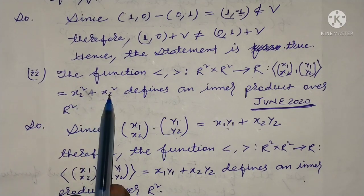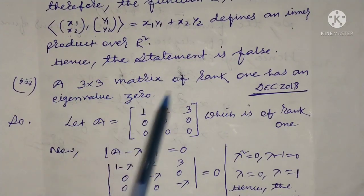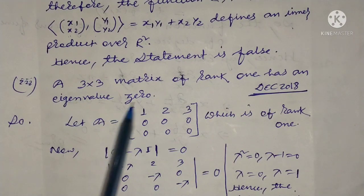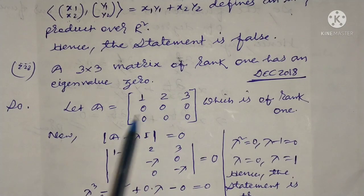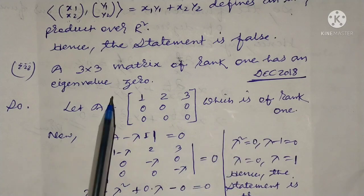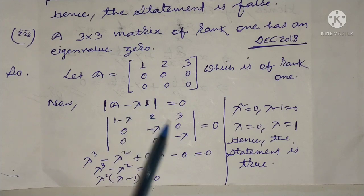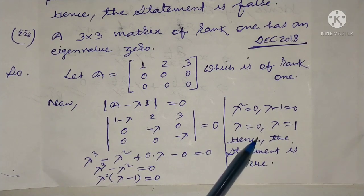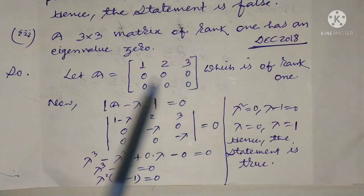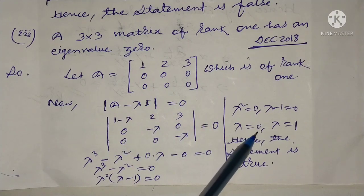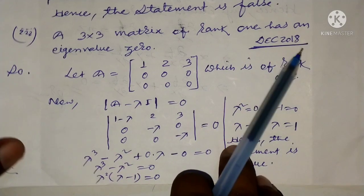Next: A 3 by 3 matrix of rank 1 has an eigenvalue 0. This statement is true. We take any 3 by 3 matrix of rank 1, and we can show that it has eigenvalue 0. For any 3 by 3 matrix of rank 1, we will get eigenvalue 0. Therefore the statement is true.